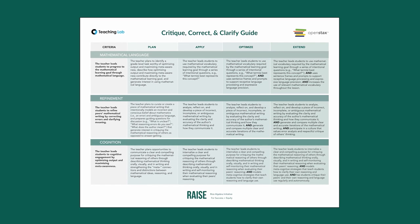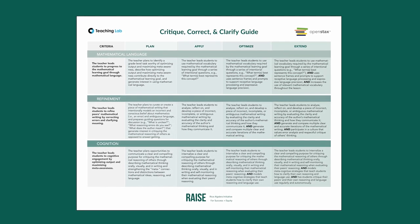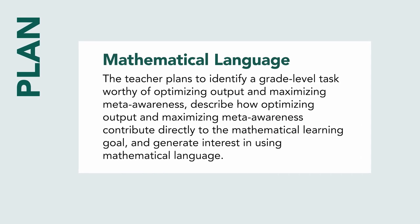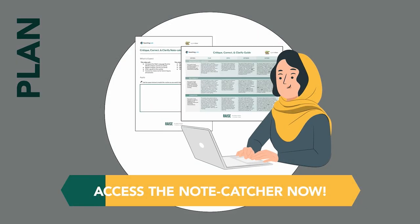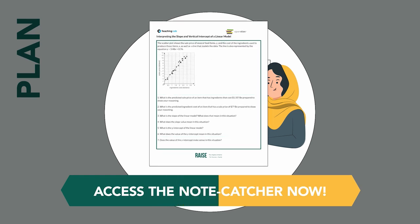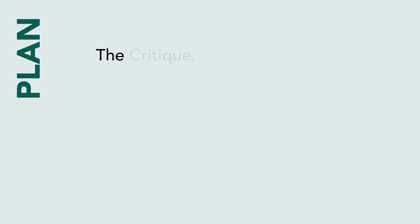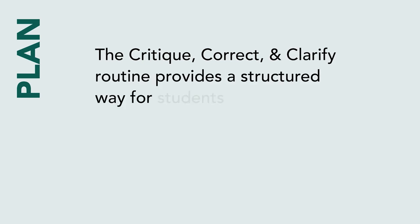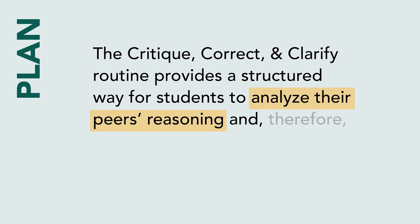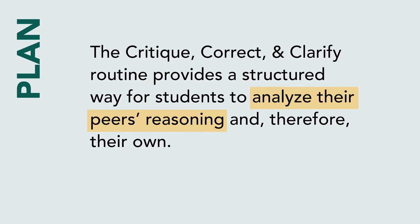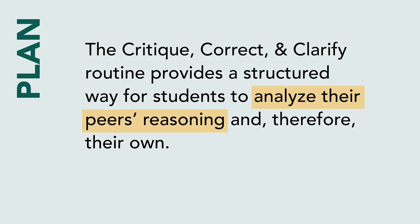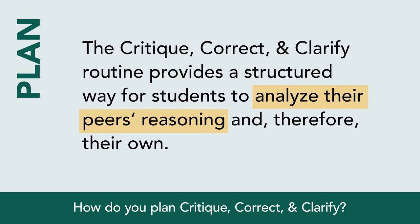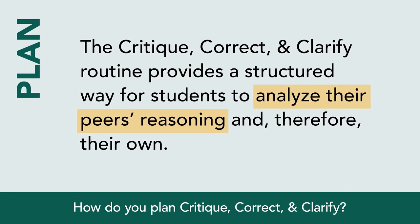Great instruction starts at the planning level. And while we'll look at all three criteria in this process, we'll zoom in to the process of planning for mathematical language. Access the NoteCatcher and Guide now to reference the full task once again. The Critique, Correct, and Clarify routine provides a structured way for students to analyze their peers' reasoning and, therefore, their own. Some curricula have built-in guidance for this routine, like the RAISE curriculum. But if you're wondering how you can bring this into your classroom now, let's see what makes an activity a good fit for this routine. So, how do you plan a grade-level task worthy of optimizing output and maximizing meta-awareness?